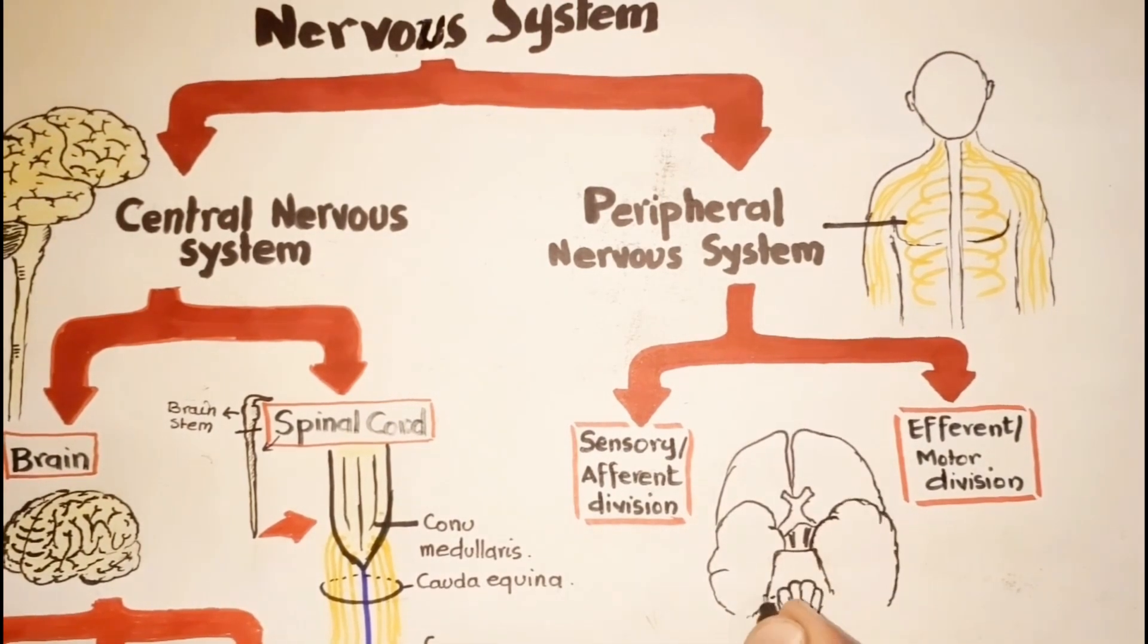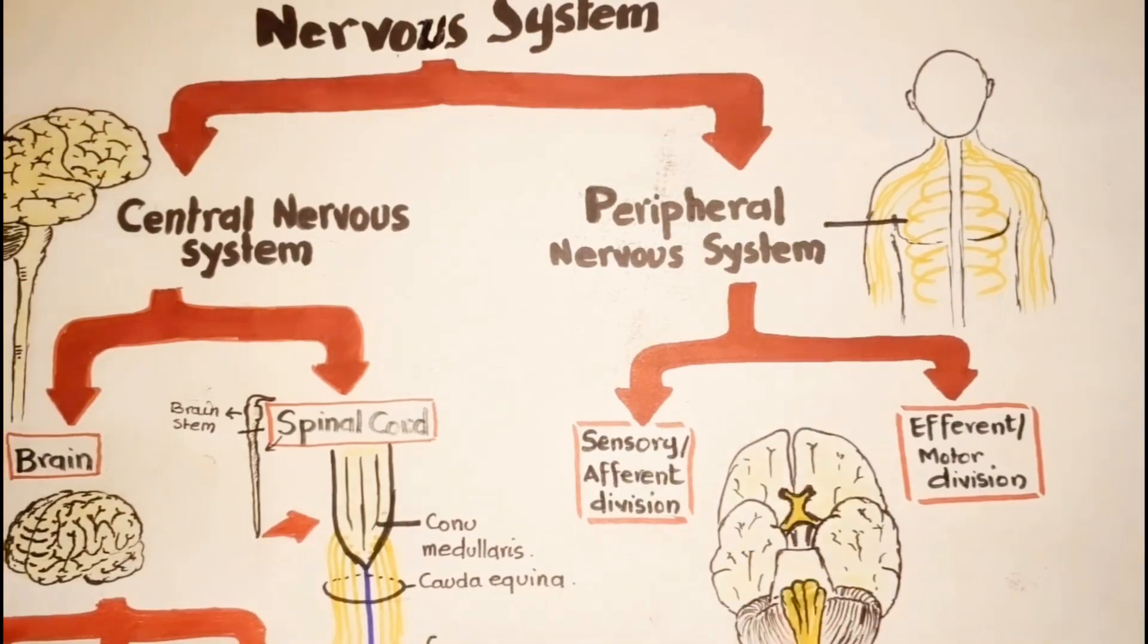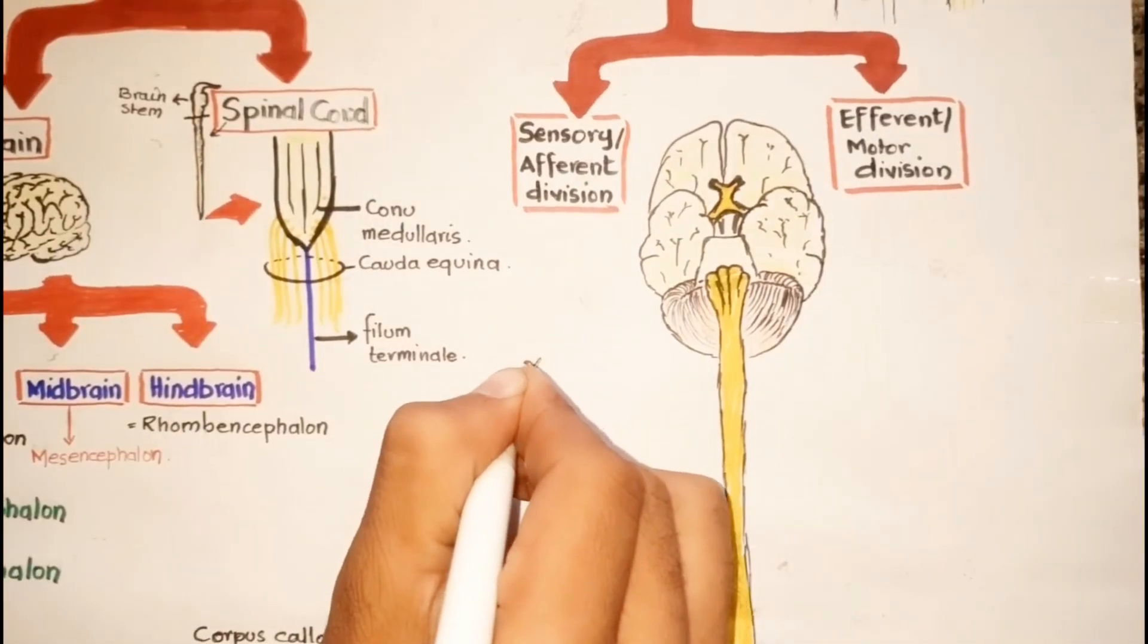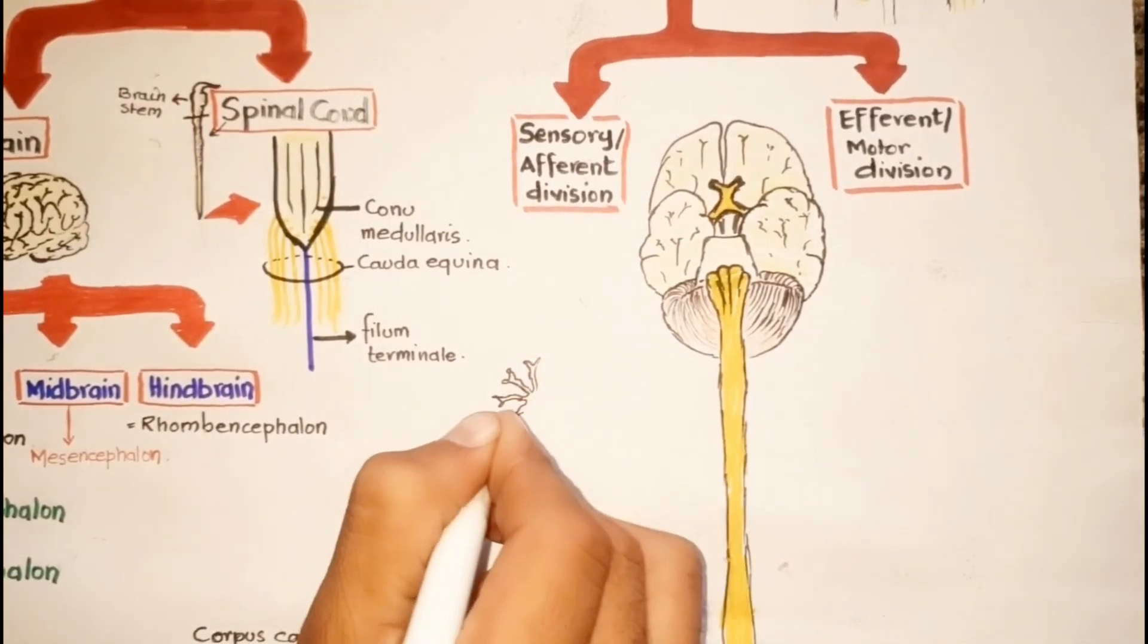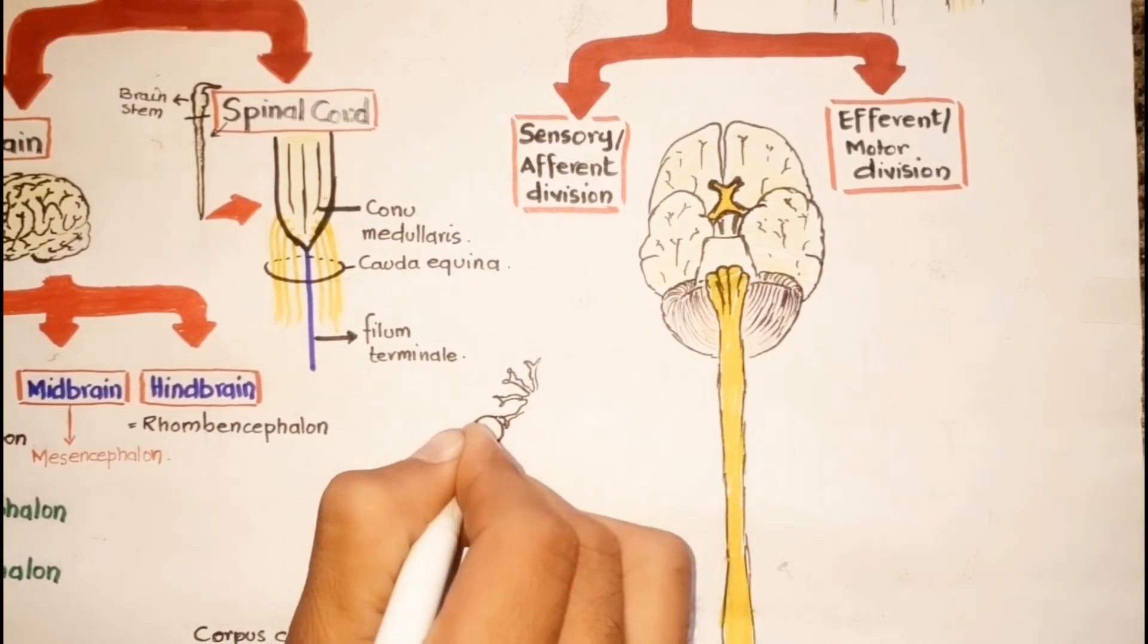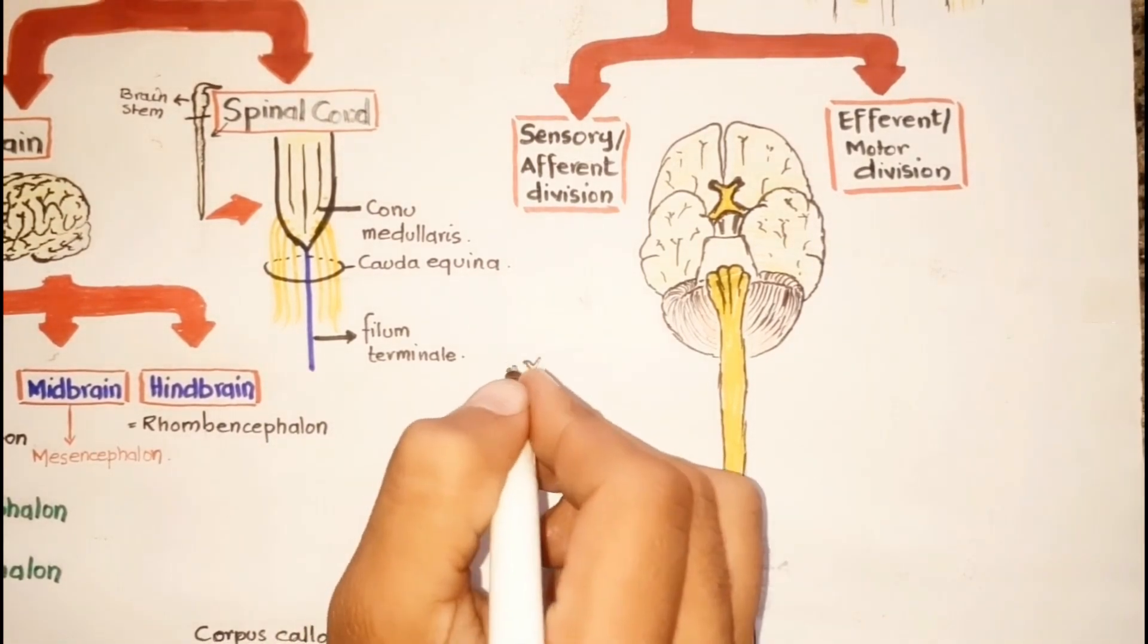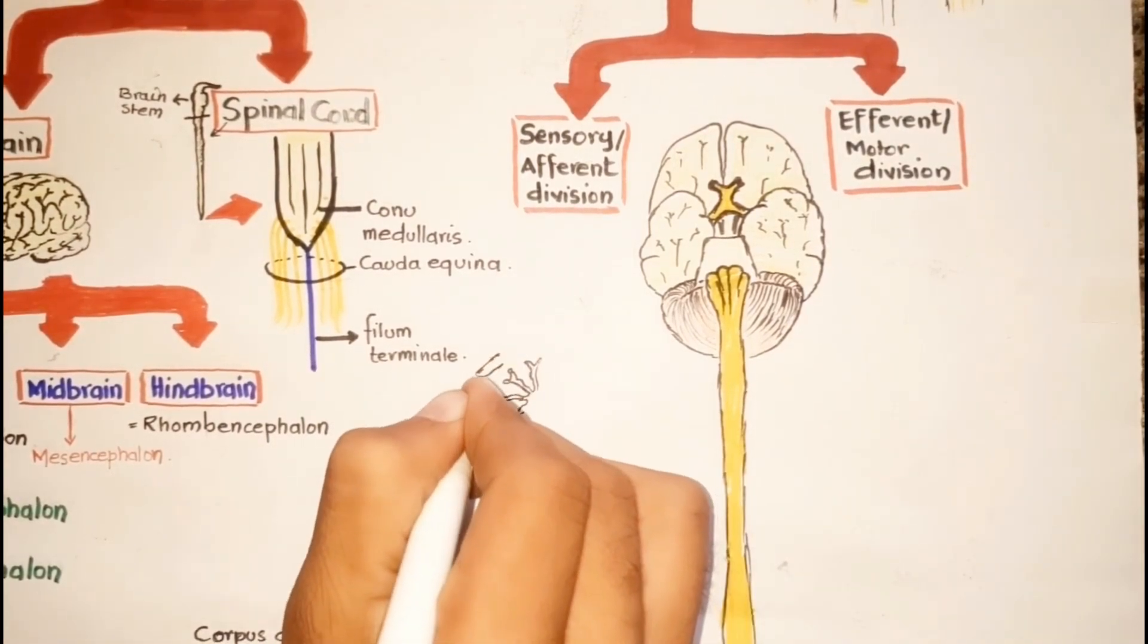Let's focus on the sensory division first. The sensory division is for sensing things through organs such as touch and sight, for example.